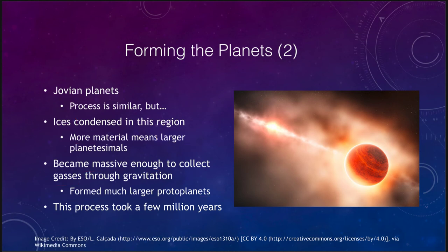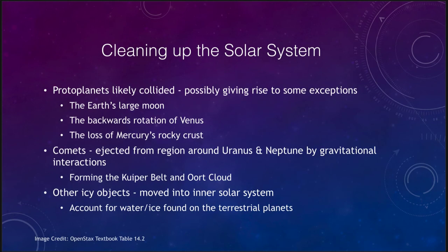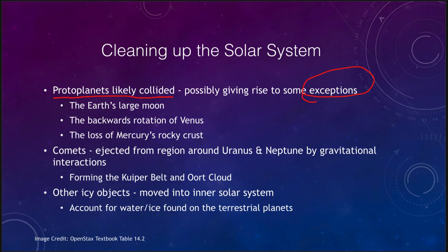Now let's look at how we can clean up the solar system, since we don't see a lot of that leftover material anymore. First, the protoplanets likely collided together over time, and those collisions may account for some of the exceptions we see. The Earth has a large moon — unique among the smaller planets. Venus rotates backwards. Mercury appears to have lost its rocky crust. Large impacts over time could explain all of these anomalies.